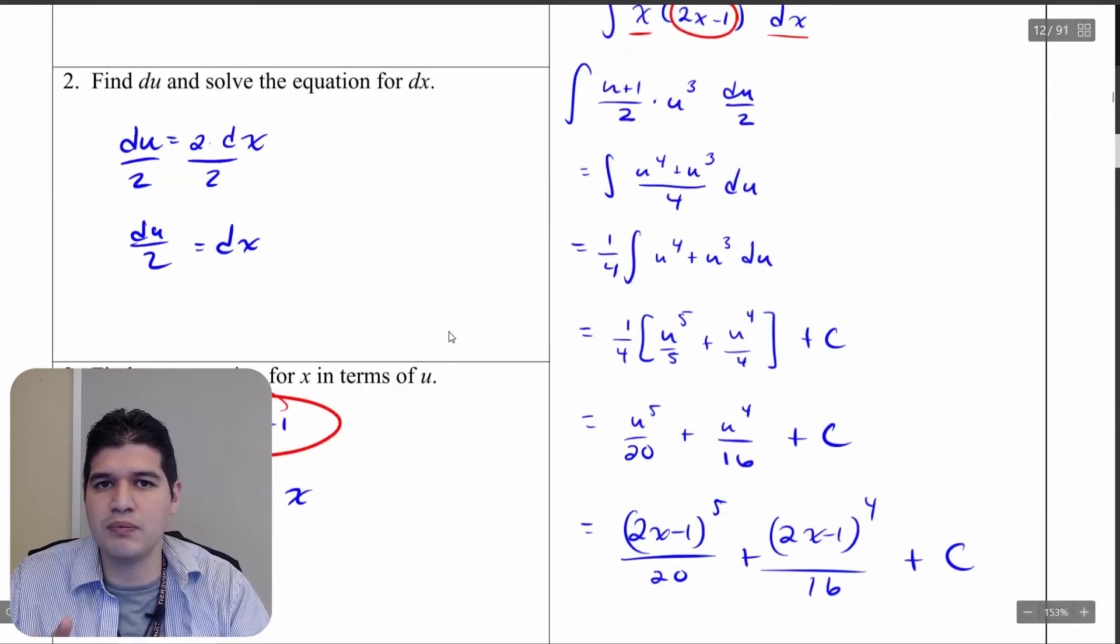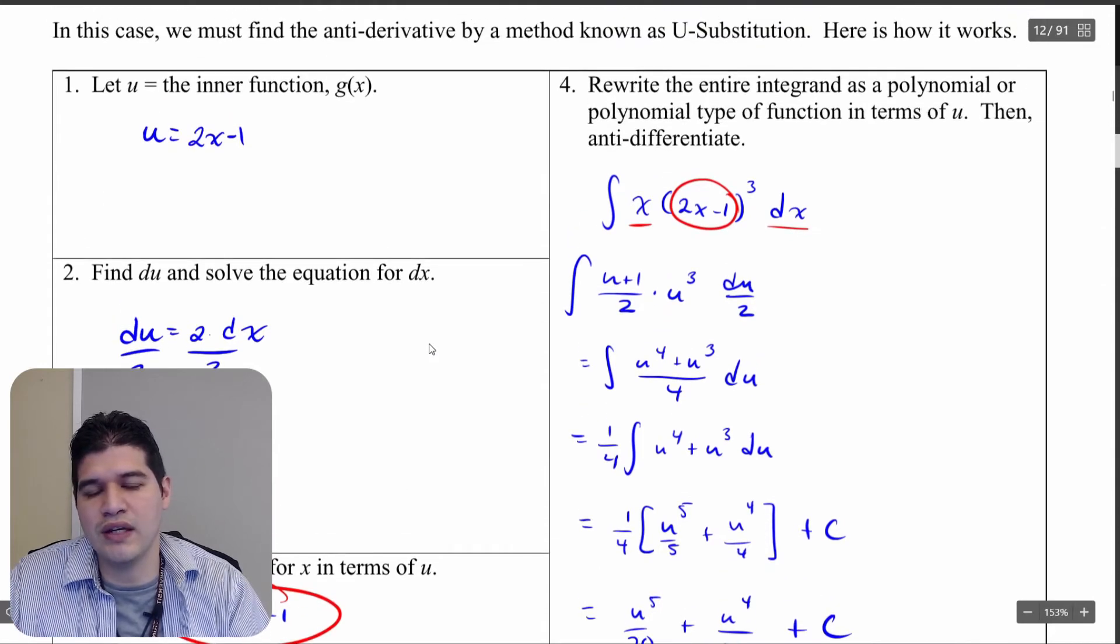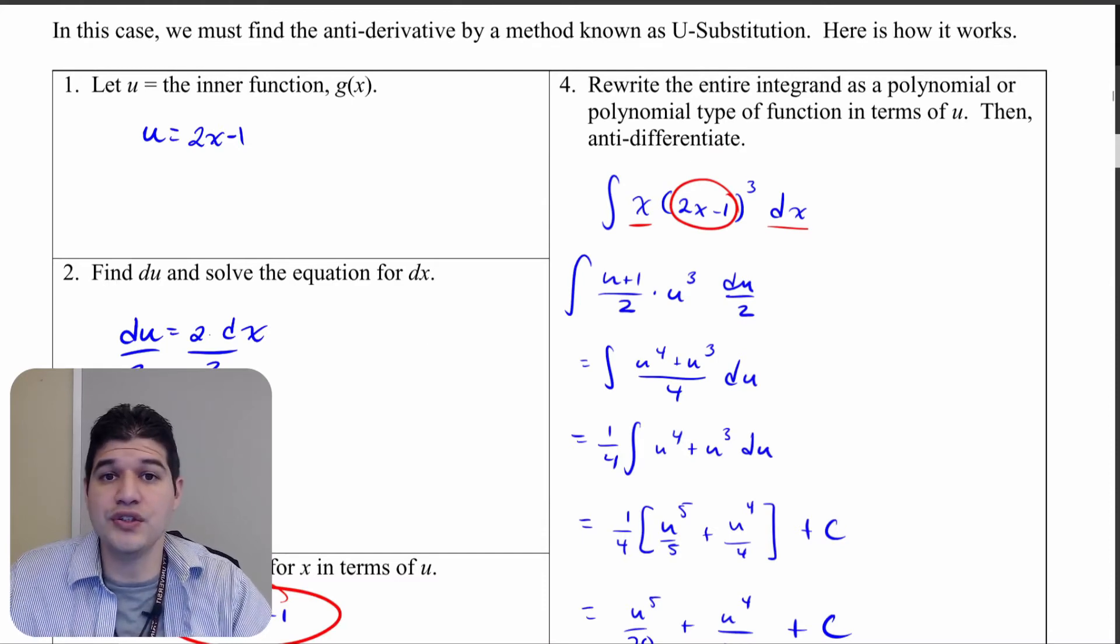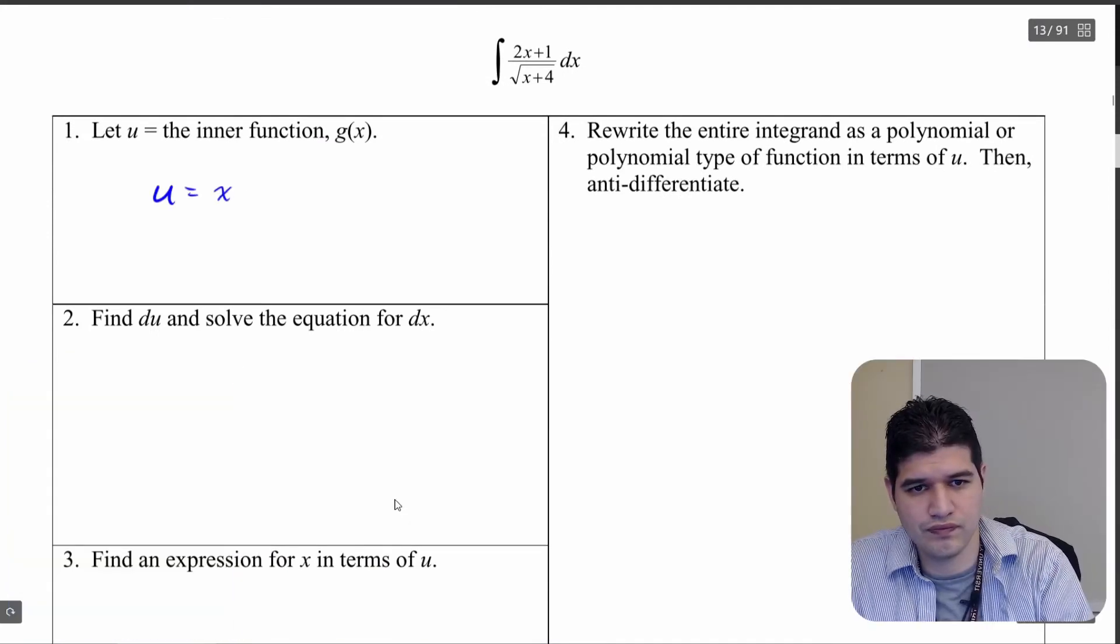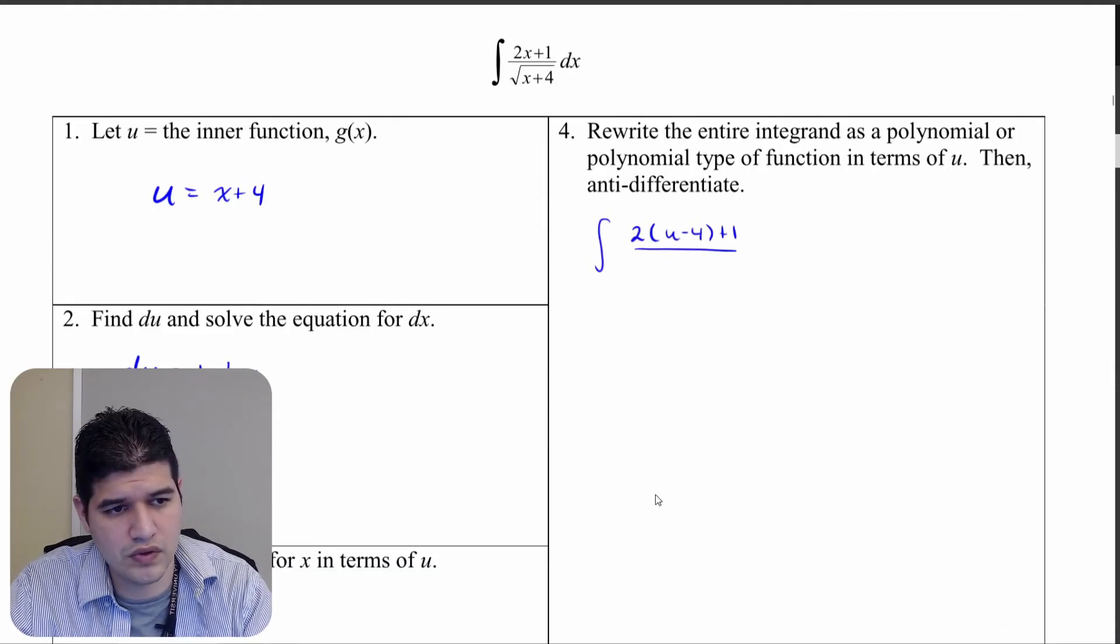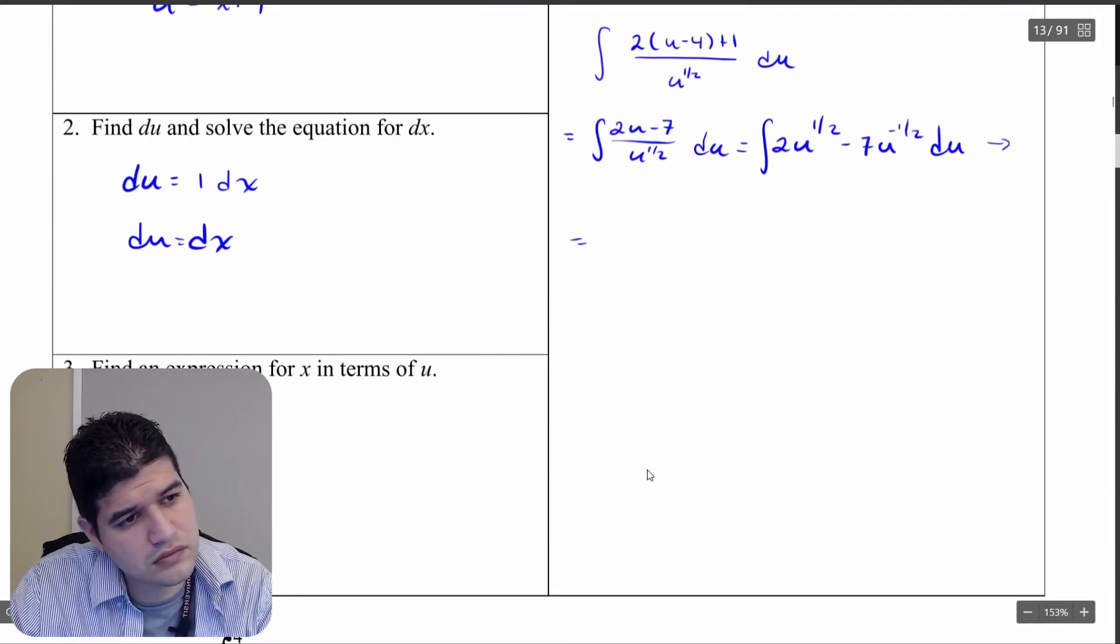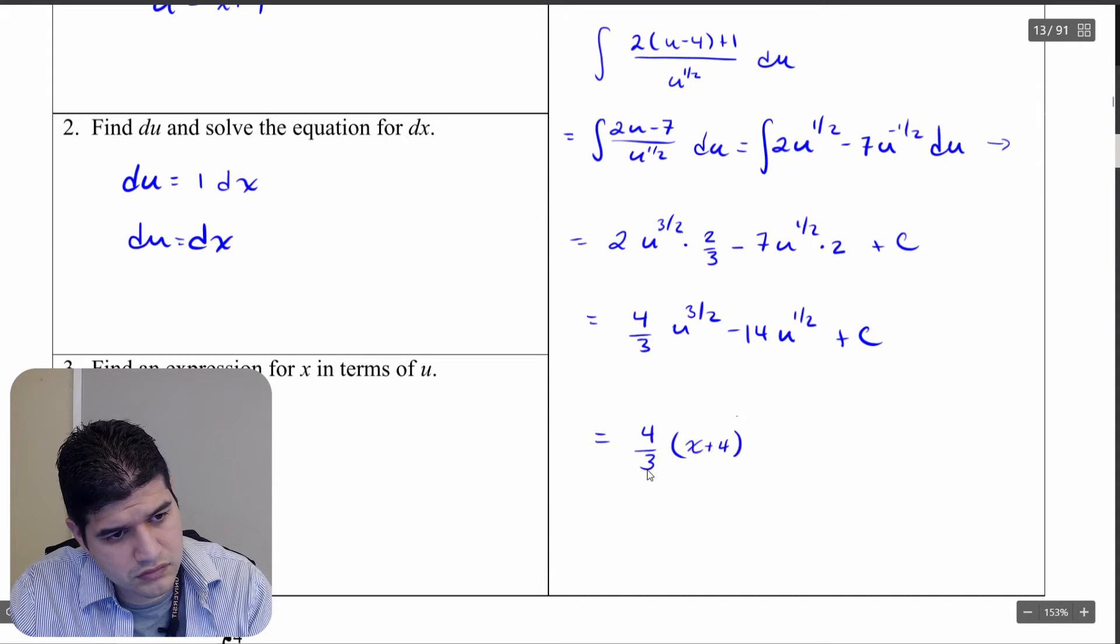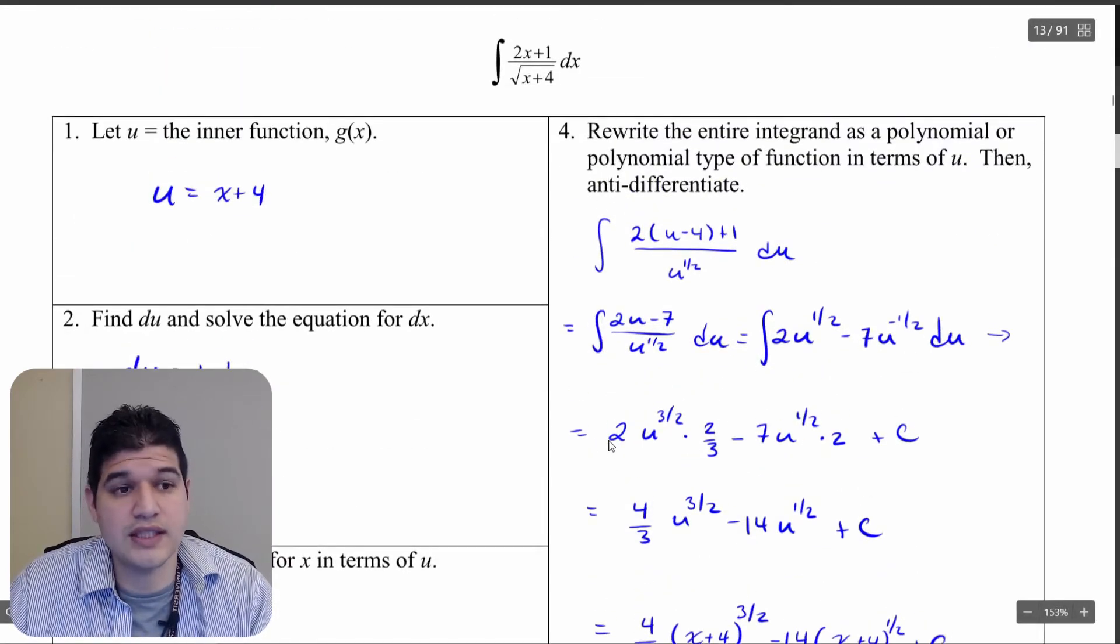And notice here, like it was a lot of manipulation. It was a lot of algebraic steps, but it helps simplify everything in terms of taking the integral when we use, when we let the inner function be symbolized as another variable. So using this problem as an example, go ahead and see if you can get the second one here. So that's going to be the solution here for the second part.